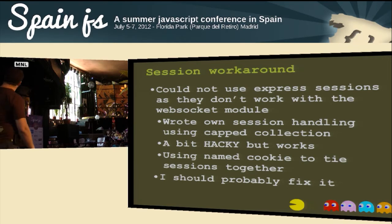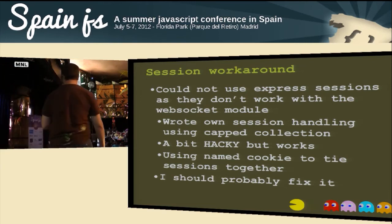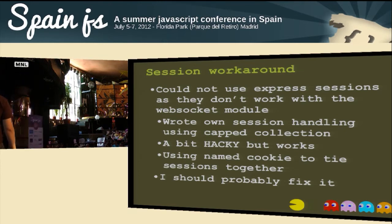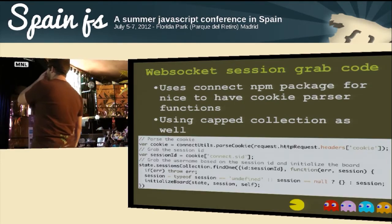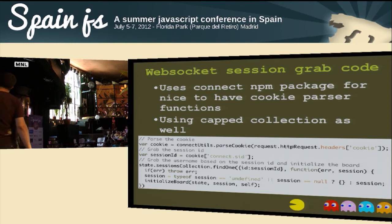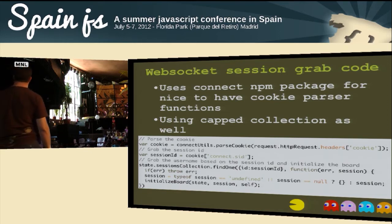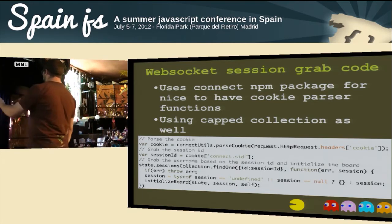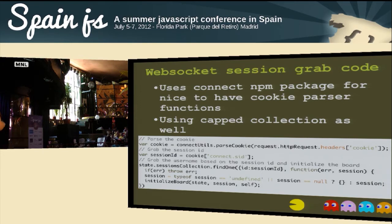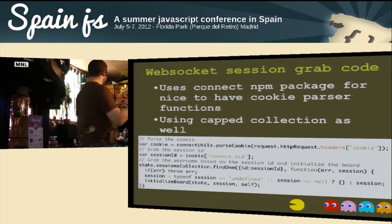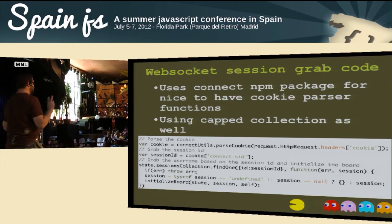I had to work around the session stuff because there's not really good support for sharing sessions between WebSockets and Express. I ended up using a name cookie — not my proudest moment, but I should probably fix it. I use the connect NPM package, which is part of Express but needs to be installed separately. It has utilities like parseCookie, which just takes the headers and parses out the cookies. I'm keeping a cookie with a connection session ID and tying it across both connections — because when you do a WebSocket connection it's a separate connection to the server, so you have to tie those two together to know which player is on which WebSocket.